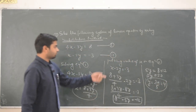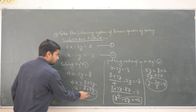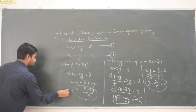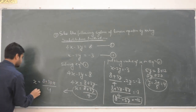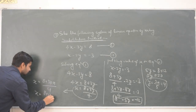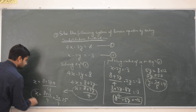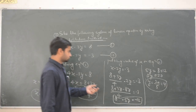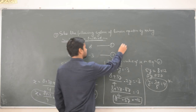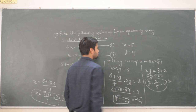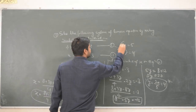We got y equal to 4. Now put y equal to 4 back into the expression for x: x equal to (8 plus 3 times 4) divided by 4 equal to (8 plus 12) divided by 4 equal to 20 by 4 equal to 5. So x equal to 5 and y equal to 4 is the solution of these two equations.